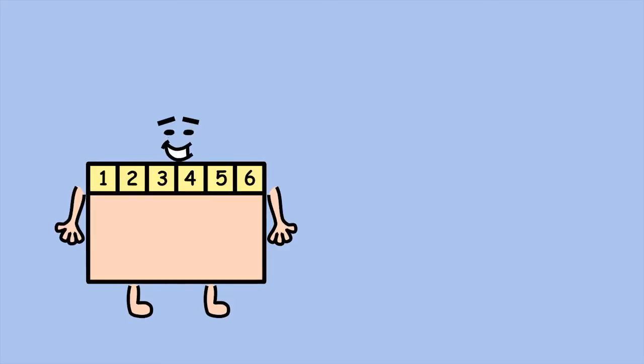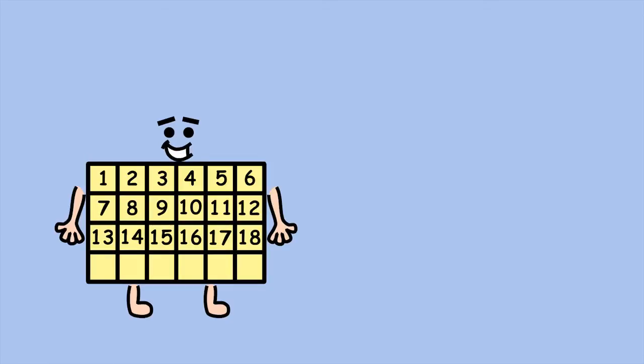Each row has six squares, so you can use skip counting by sixes to add up the total number of squares: 6, 12, 18, 24.